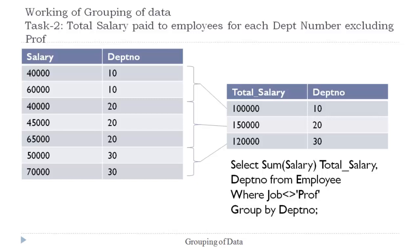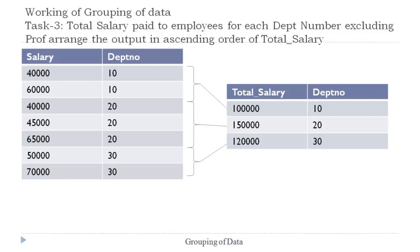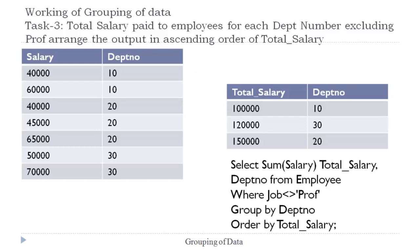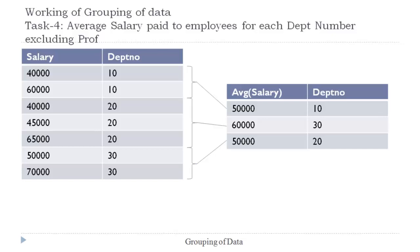Task 3 extends this further to arrange the output in ascending order of total salary, using an ORDER BY clause. ORDER BY total_salary is added to the existing SELECT statement to arrange records in ascending order of total salary. Task 4 requires finding the average salary paid to employees for each department number excluding professors. The same steps apply: exclude professor records, group by department number, then apply the AVG function on each group. The query is: SELECT AVG(salary), department_number FROM employee WHERE job != 'professor' GROUP BY department_number.